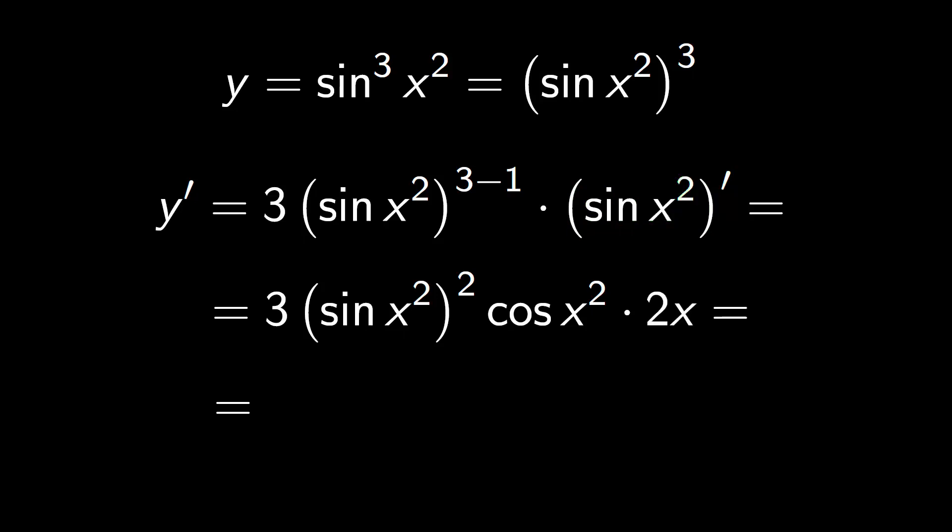This is equal to 3 times 2, 6, x. Now this square affects the whole sine. We write it in abbreviated form, sine squared of x squared, cosine of x squared. And this is the derivative of the given function.